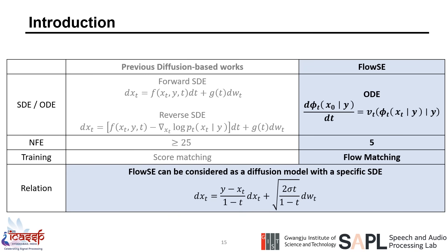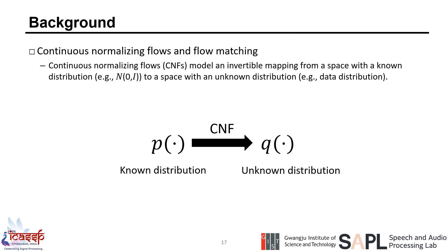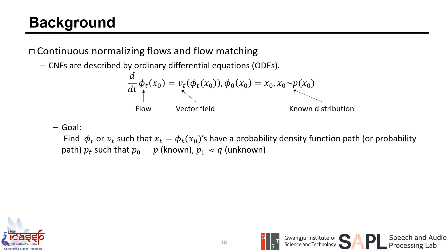Furthermore, we demonstrated that Flow SE can be interpreted as a diffusion model with a specific SDE background. Continuous normalized flows model an invertible mapping from a space with a known distribution to a space with an unknown distribution. These are described by ordinary differential equations (ODEs), which describe how a starting point from the simple distribution is transformed by the flow. We want to find the flow or vector fields such that Xt transformed by the flow has a probability path PT where P0 equals the simple distribution P and P1 approximates the unknown distribution Q.